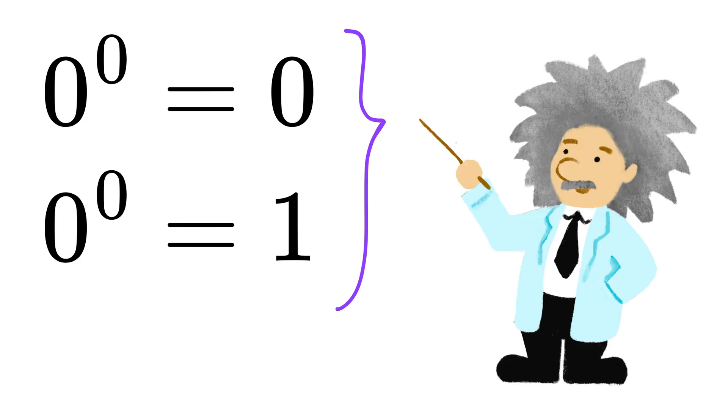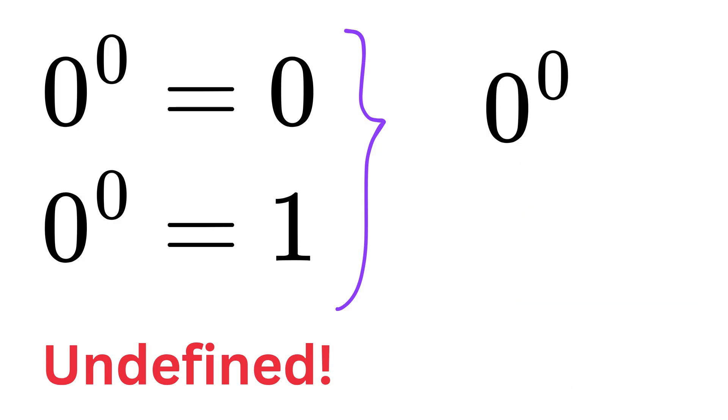And in mathematics, when we get such conflicting behaviors, we call the result undefined. So zero raised to power zero is actually not clearly zero or one. It doesn't have a fixed value, it depends on the context, and that's why many mathematicians just call it undefined.